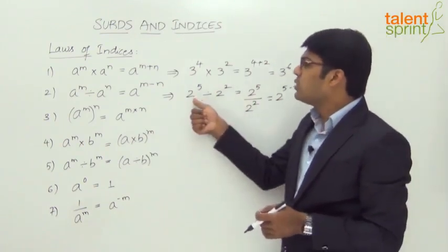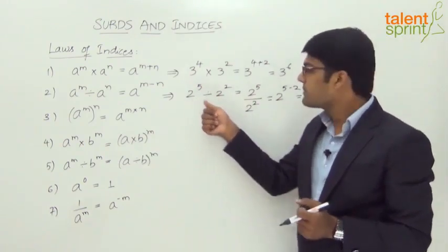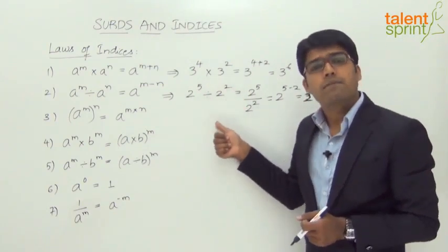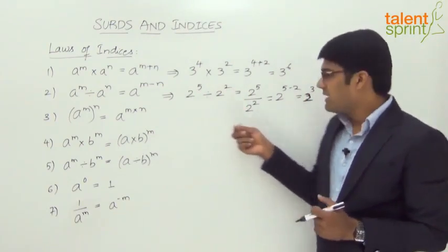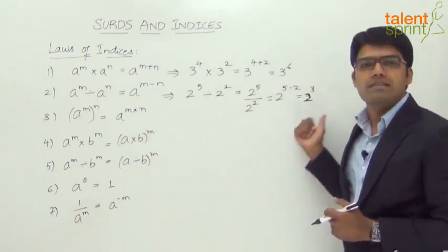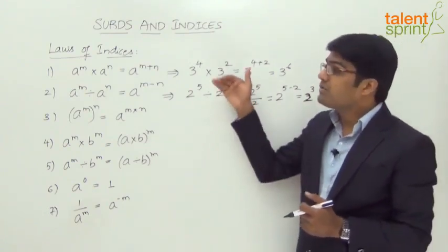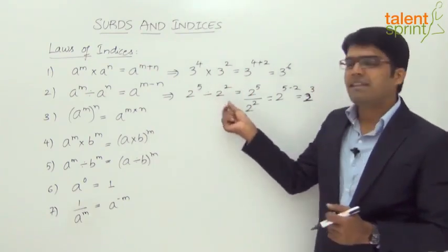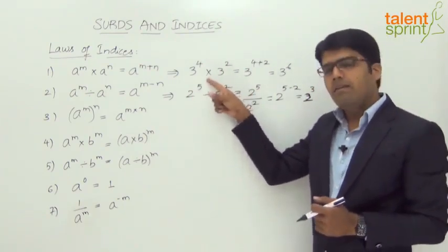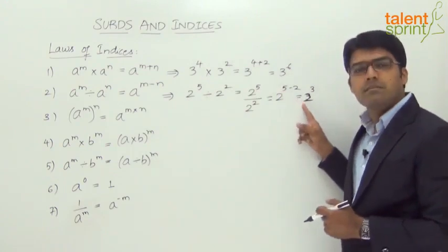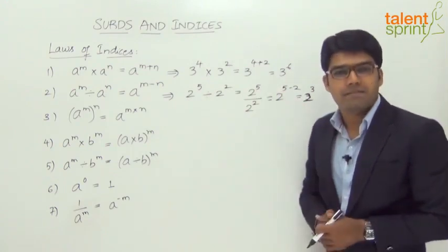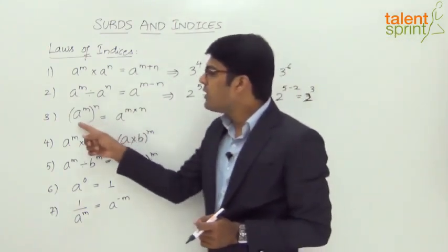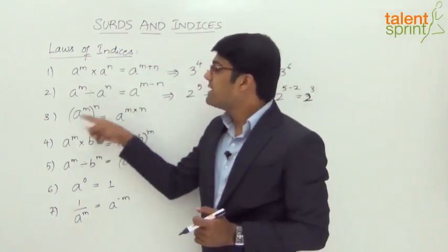Let's verify: 2 to the power of 5 is 32, and 2 to the power of 2 is 4. 32 divided by 4 is indeed 8. That's the advantage of using these laws — instead of simplifying each term and then dividing or multiplying, we can directly look at the resultant term and simplify to get the answer.